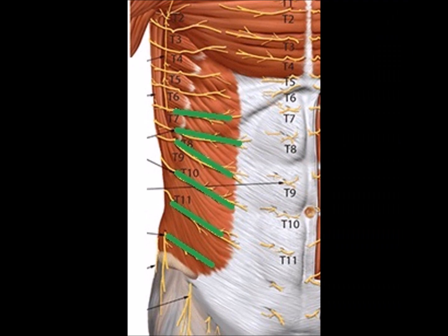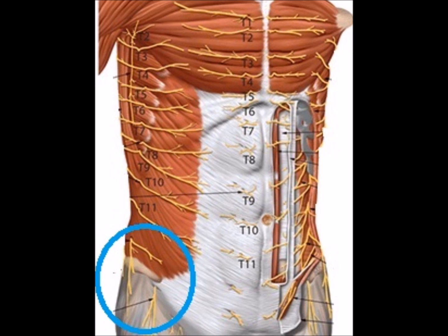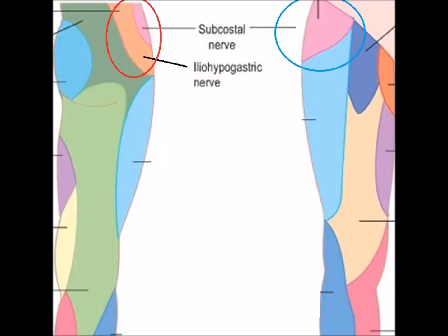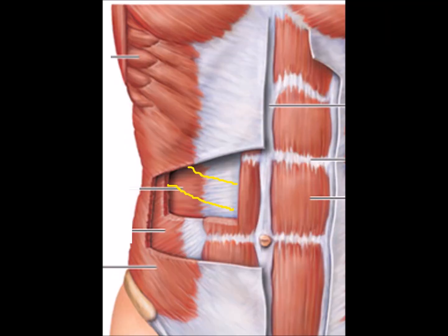At the mid-axillary level, the nerves give their lateral branches which supply the anterior abdominal wall muscles and overlying skin lateral to the navel line. Note: the lateral branches of the subcostal and ilio-hypogastric nerves supply the lateral aspect of the upper thigh.